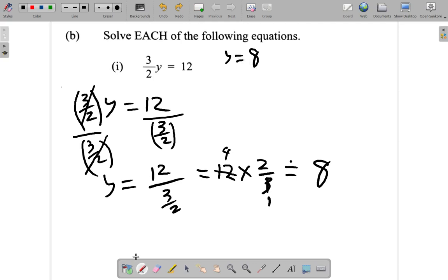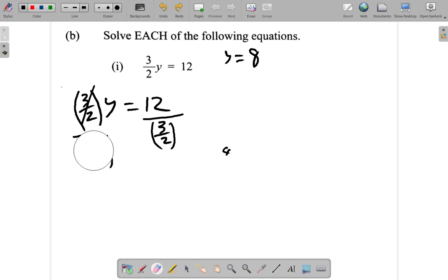Thinking of another way we could approach this question, since you have 3 over 2 multiplied by y, instead of getting rid of the entire 3 over 2 at once, we could get rid of one number at a time.